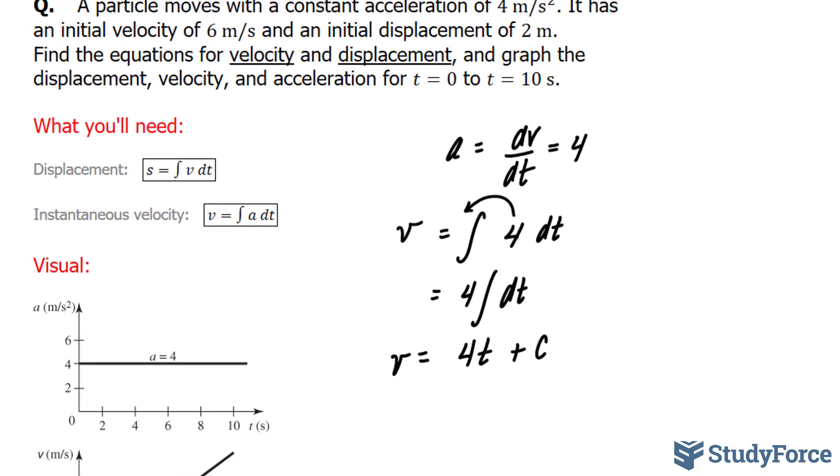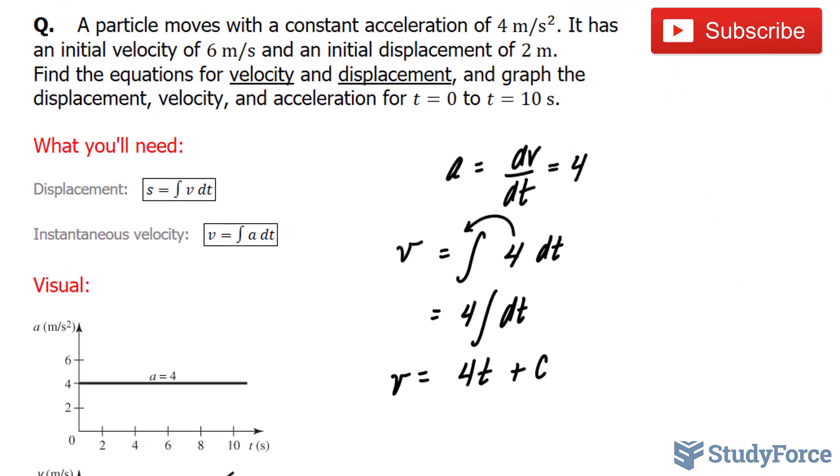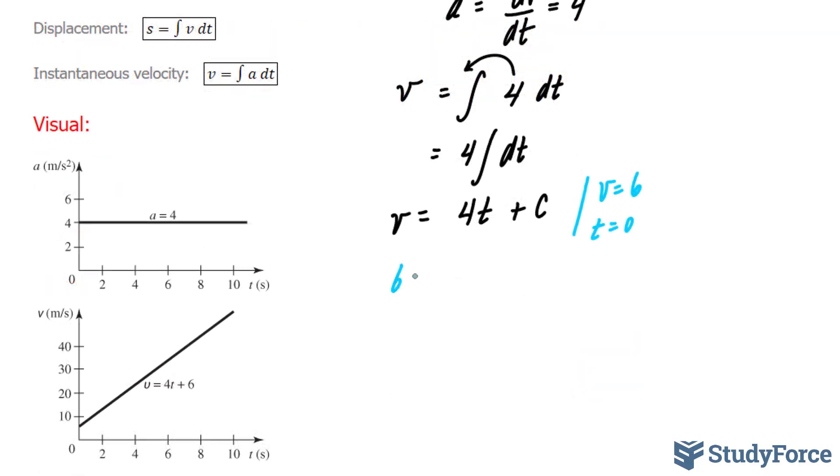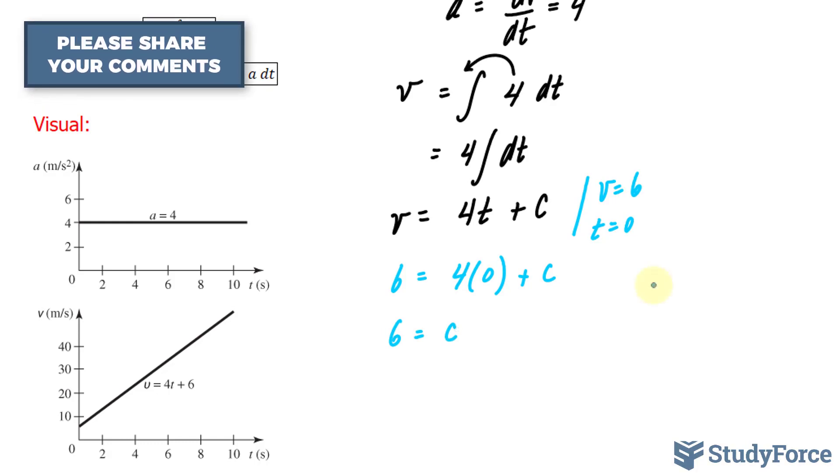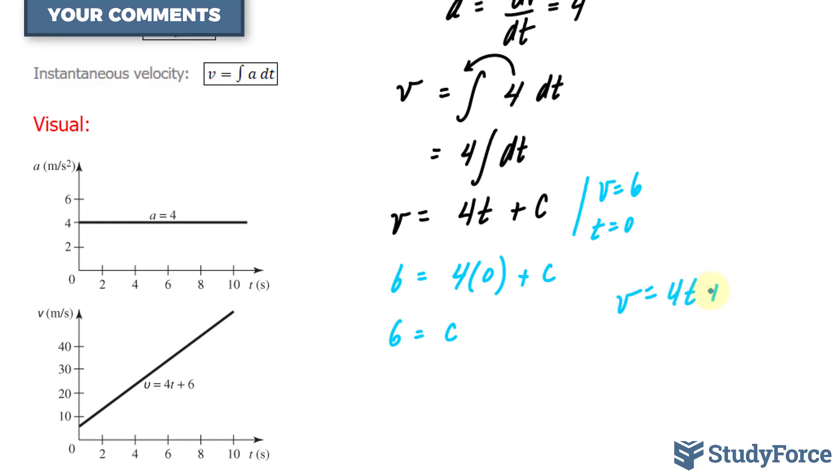One interesting feature about this question is that they tell us the initial velocity is 6 meters per second. So we can find the constant by substituting 6 meters per second into v and solving for c. v is equal to 6, and this is happening at time equal to 0. 6 is equal to 4 times 0 plus c. Therefore, c is equal to 6. The velocity equation is v is equal to 4t plus 6.